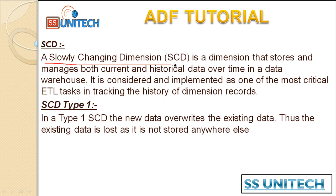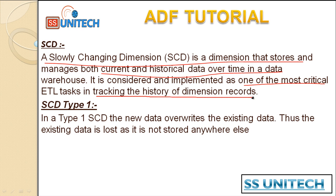A Slowly Changing Dimension is a dimension that stores and manages both current and historical data over time in the data warehouse. It is considered one of the most critical ETL tasks in tracking the history of dimension records. In the data warehouse, dimension tables are rarely updated, and we implement SCD to manage how existing values are replaced or historical data is kept.